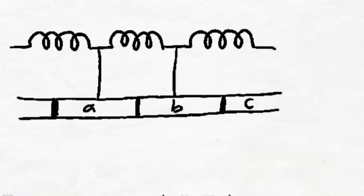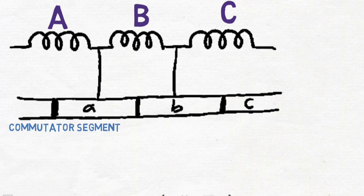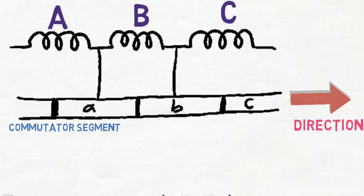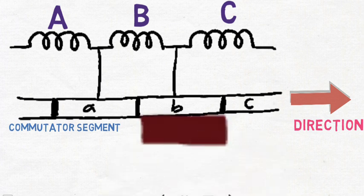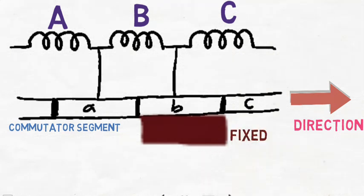Now let's understand the current commutation process. Here we have armature winding with coil A, coil B, and coil C. Below each coil, the small labels A, B, C represent the commutator segments. The armature motion is from left to right. Assume that the width of the brush is equal to the width of a commutator segment, so only one coil is short-circuited at a time. The brush is fixed and only the commutator segment moves.